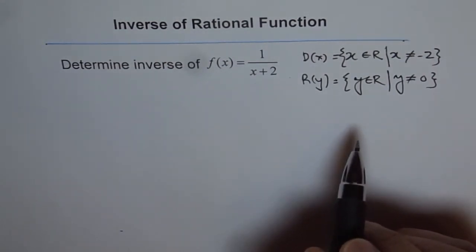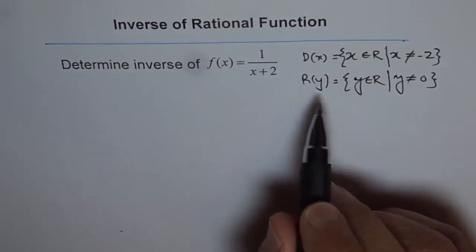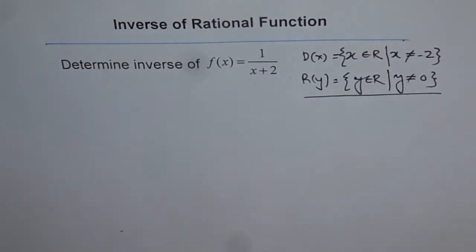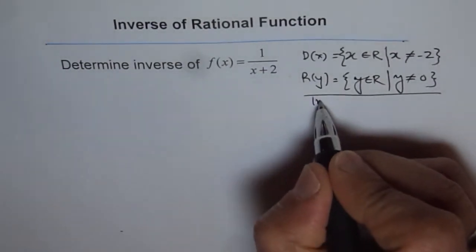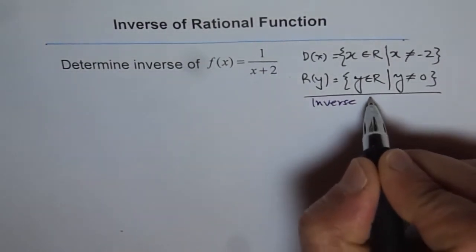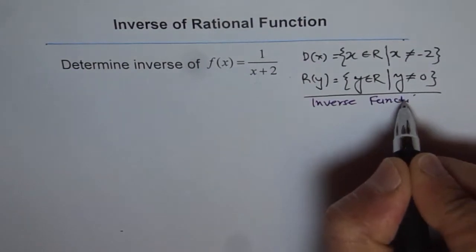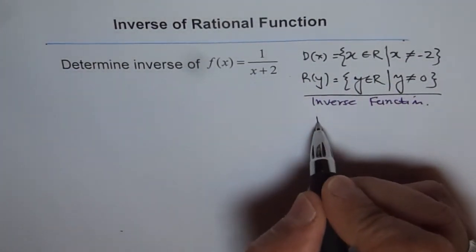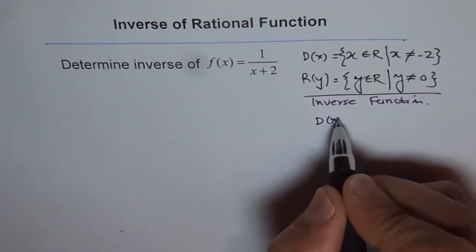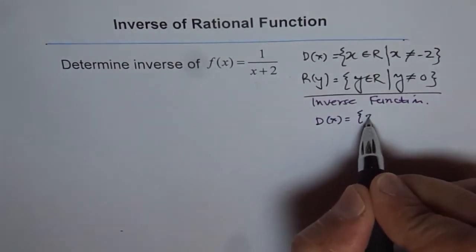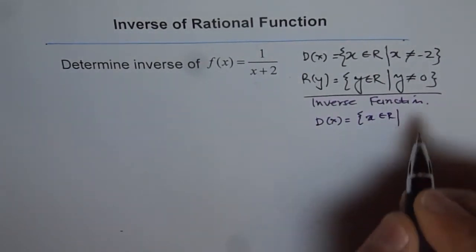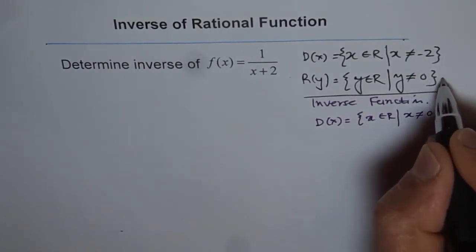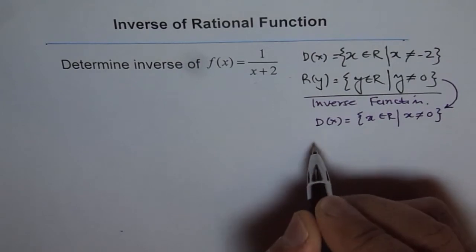Now, domain and range of the inverse will be—let's write it down. For inverse function, domain and range will flip. So the domain for the inverse function is going to be x belongs to real numbers but x will not be equal to 0. So that becomes the domain.